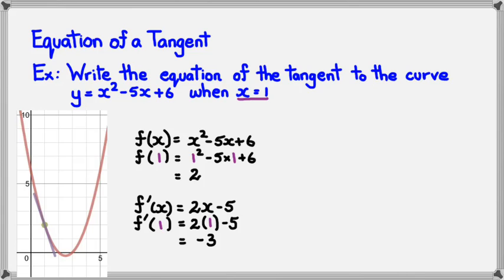So I have all the things that I need, which is the gradient and the point. Which means I could use equation of a line. Just in case you've forgotten it, that's y - y₁ = m(x - x₁). Now there's many variations in how you write an equation of the line, but this is one of the ones that I'm familiar with.